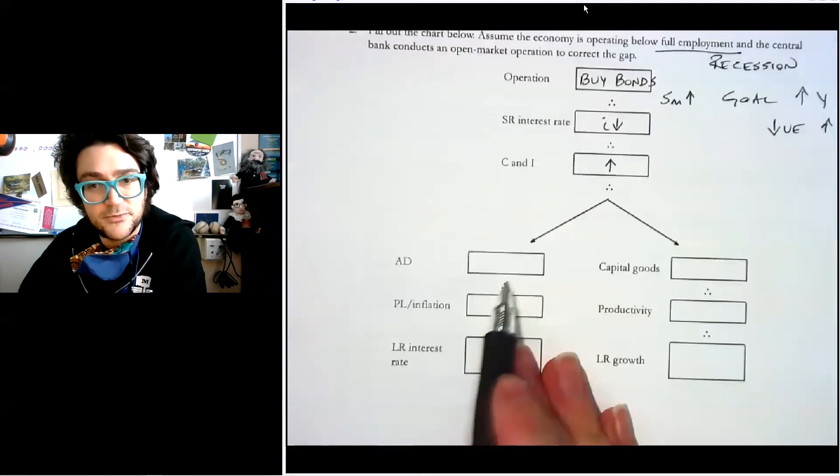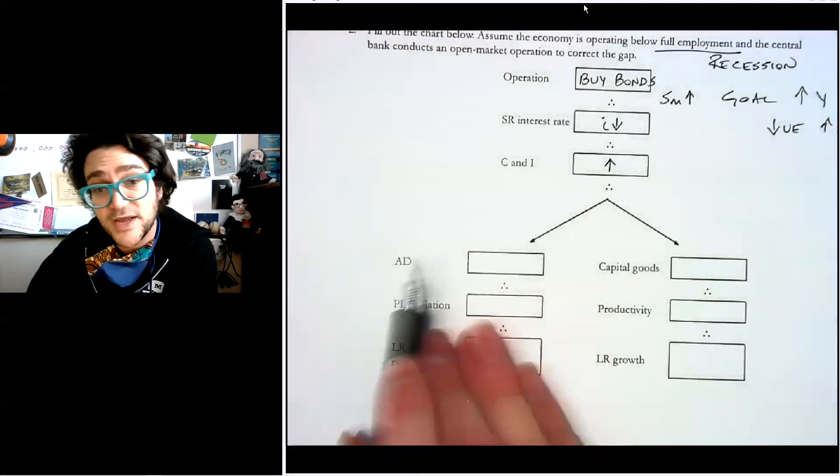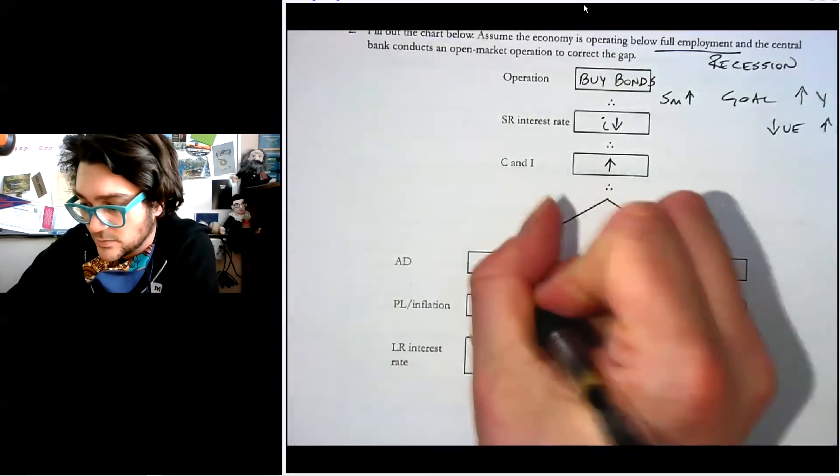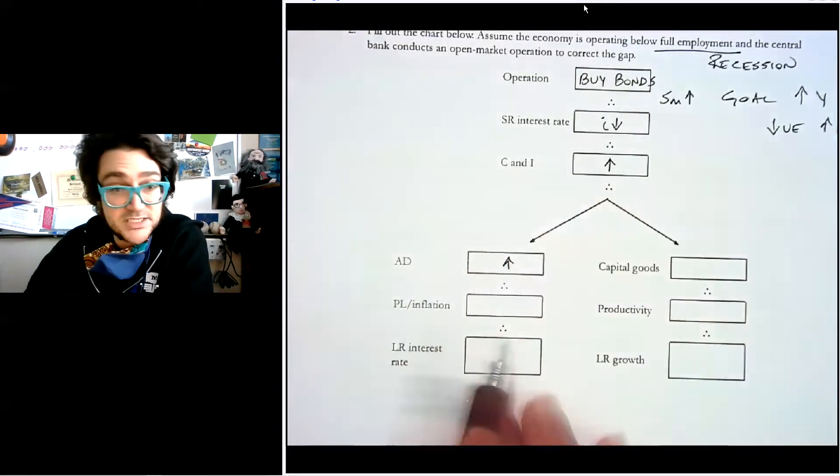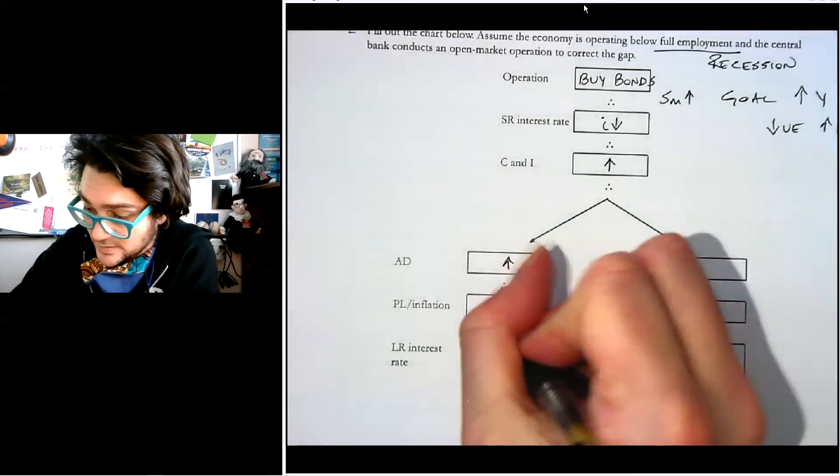Now let's go over to this side of the story. We know that consumption and investment are part of aggregate demand. So aggregate demand will go up. Price levels and inflation should go up.